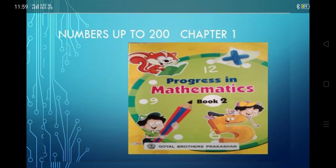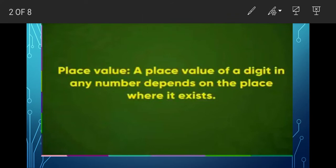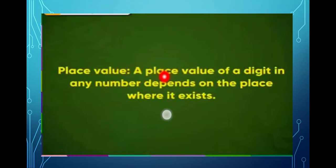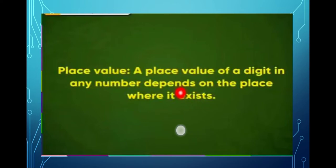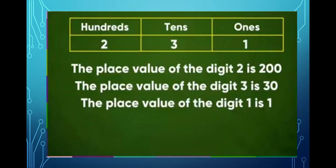So what is place value? Place value means: the value of a digit in any number depends on the place where it exists. In other words, the value of a digit based on its place in a number is called its place value.